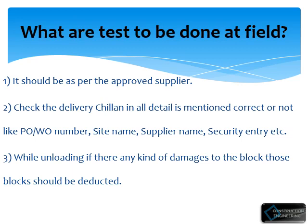Second, we have to check the delivery challan. In the delivery challan it should be clear that the PO and work order number are matched. Site name, supplier name, and security entry — these things we have to check while receiving and signing the delivery challan.